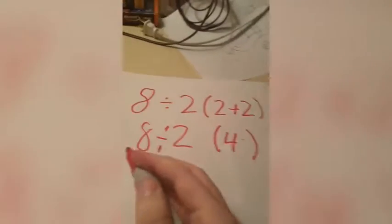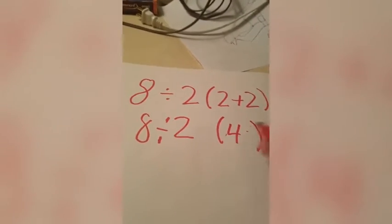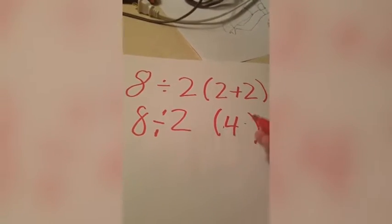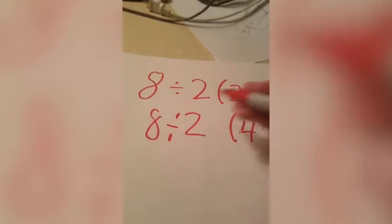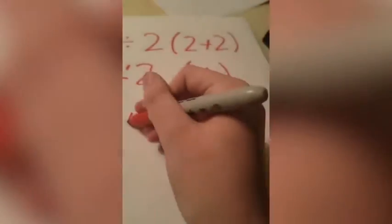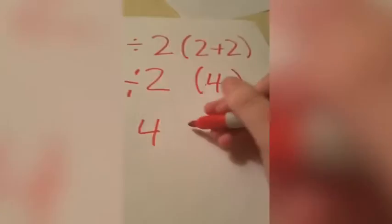Now we have to go left to right. Although you may see these parentheses as something you still need to do, but no — because it's already done. So you want to do 8 divided by 2, which is 4.